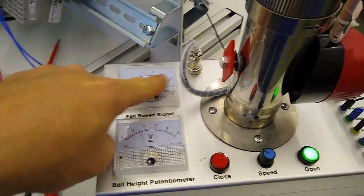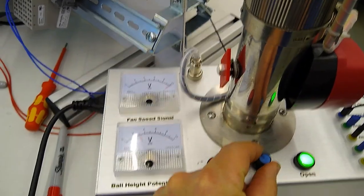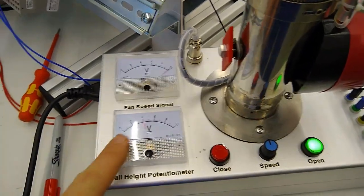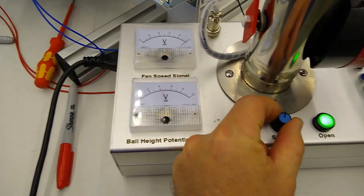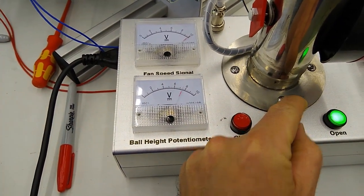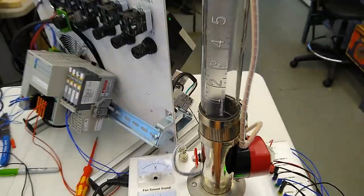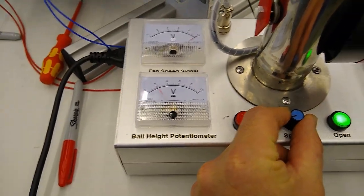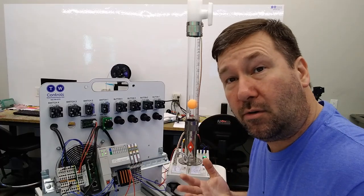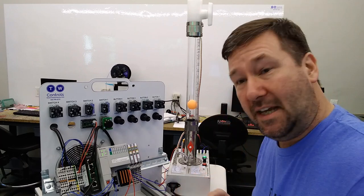Also you can see the signal here coming from the PLC and then we have our ball height. So if we run this all the way up this goes high and as we run it down which we can also see the ball coming down, it's going to come on down. So there's a whole lot of good things that we can learn with this PID trainer.